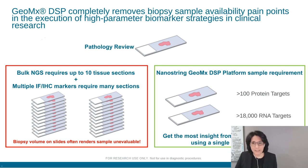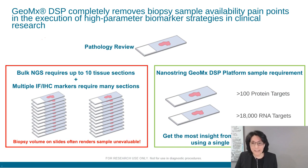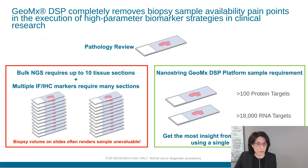GeoMx DSP enables scientists to generate as much information as they want using high-plex spatial RNA and protein assays. This approach offers interrogation of over 100 protein markers and up to 18,000 RNA targets using very small amounts of sample. Very soon, a new workflow will become available that will enable the measurement of both protein and RNA on the same tissue section — so stay tuned for more news on this.